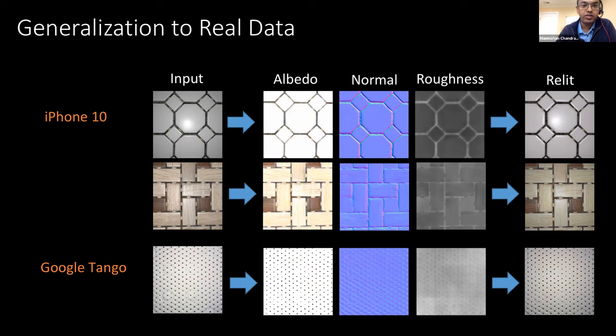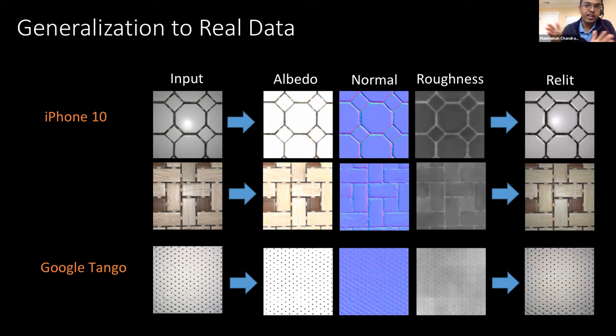Having a physically motivated rendering layer helps ensure that components are estimated in a way that they can be rendered back to realistic images. But nothing beats having real data for individual components for supervision. When real data is available for individual tasks like depth or normal estimation, it leads to better quantitative performance.